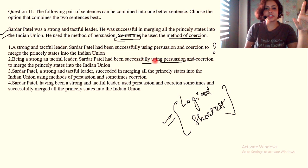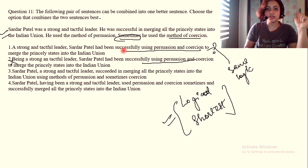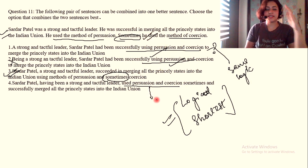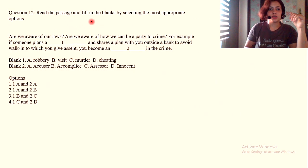See, I'm eliminating and solving with you. I've read these questions for the first time. They say sometimes he used the method of coercion, but here they're coupling the two, equating all of these. Sardar Patel, a strong and tactful leader, succeeded in merging all the princely states into the Indian union using methods of persuasion and sometimes coercion. Most probably this is our answer, but we eliminate the fourth one. SP having been a strong, again the same logic, where is sometimes? Where's the differentiation? So our answer is three.